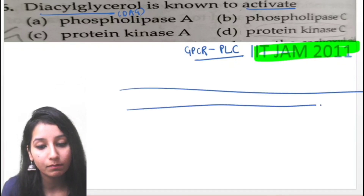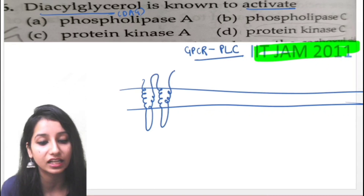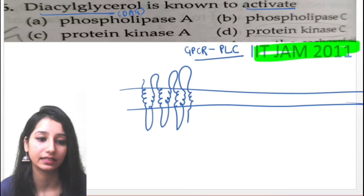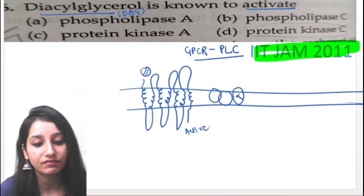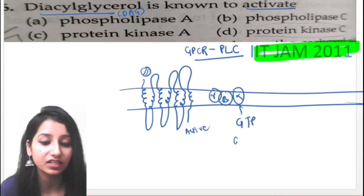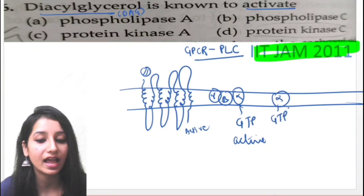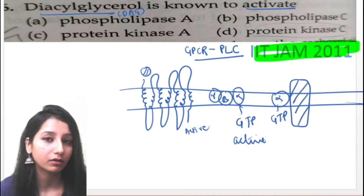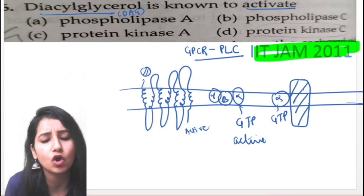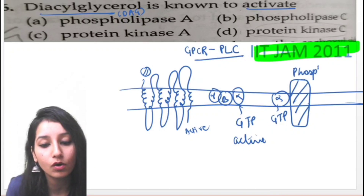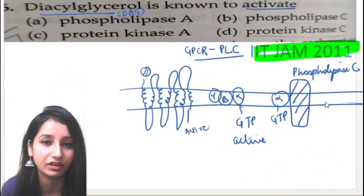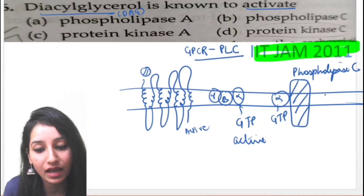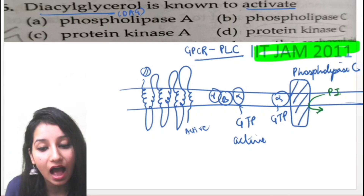Once again, the GPCR is present in the plasma membrane, crossing the membrane seven times. The ligand activates the receptor, which activates the alpha subunit via GTP binding. The alpha subunit then acts on the effector molecule — here the effector molecule is phospholipase C (PLC) rather than adenylyl cyclase. Phospholipase C is an enzyme that gets activated, and it converts PIP2 (phosphoinositol 4,5-bisphosphate) into IP3 plus DAG (diacylglycerol).